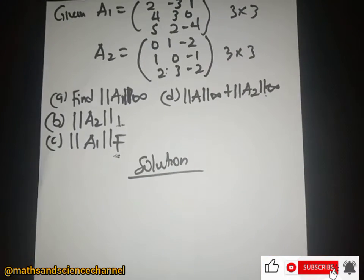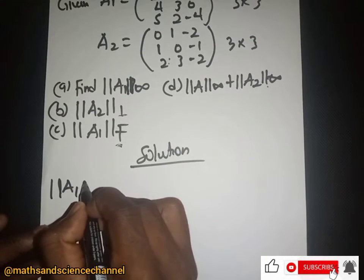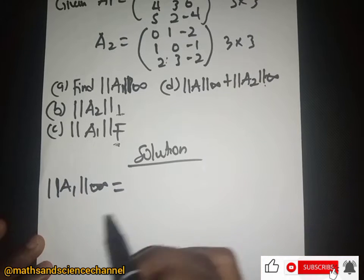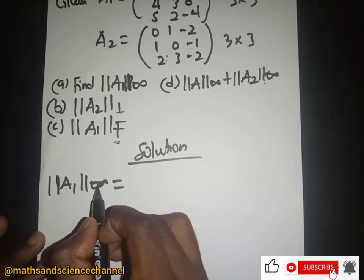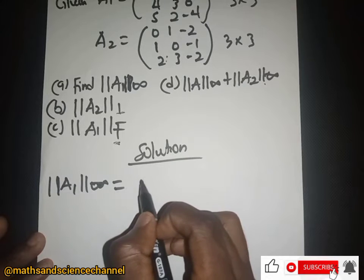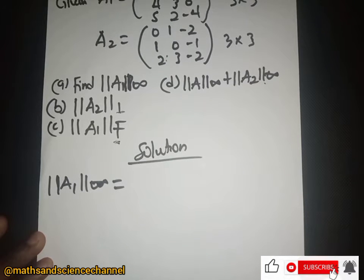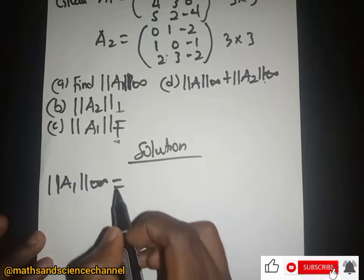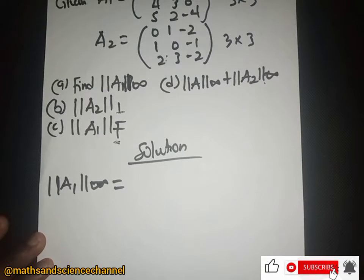Let's look at the first part — finding the infinity norm. The vector norm is different from the matrix norm. For the vector infinity norm, you find the maximum of the absolute values. But for the matrix infinity norm, you sum all the values in each row, then take the maximum of those row sums.